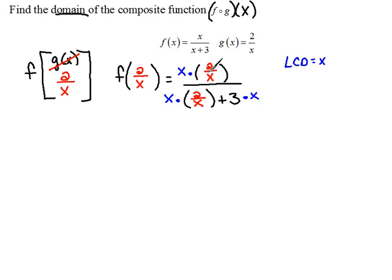Now, when we do that, look what happens on top. We have x on the bottom and an x on top. Those cancel out. So in the numerator, all we have is a 2. And in the denominator, for our first term, the x's cancel. So our first term is a 2. Plus, 3 times x would be plus 3x. This is our composite function.